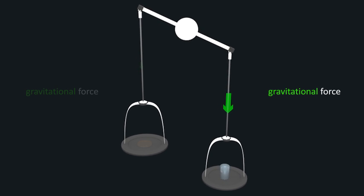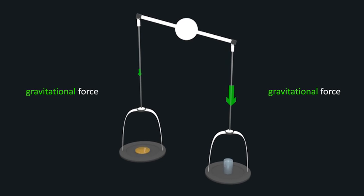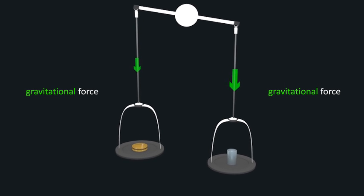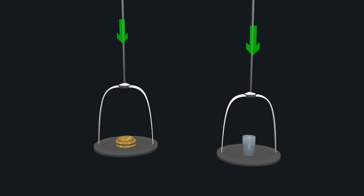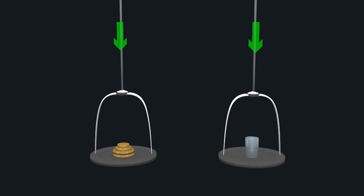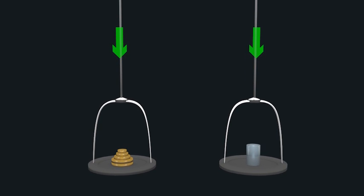An ordinary beam balance works by adjusting the amount of mass on one side of the beam so that its weight exactly balances the weight of a test mass on the other side, gravitational force against gravitational force.